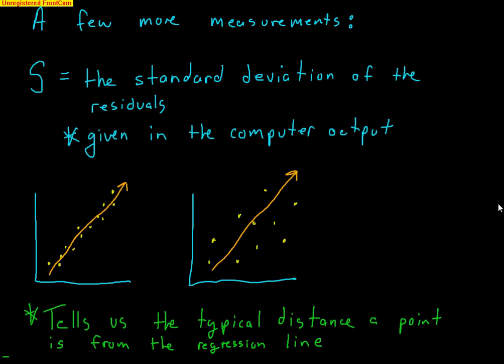One more important value we'll learn is S. We did learn that S is the standard deviation, and that still holds true — but in the context of a linear model, S is the standard deviation of the residuals. You don't need to worry about the formula; you'll always be given the value of S in the computer output. Standard deviation means how far a typical value is from the mean, so for a linear model, S tells us how far a typical point is from the regression line — since a residual is how far your actual point is from the line.